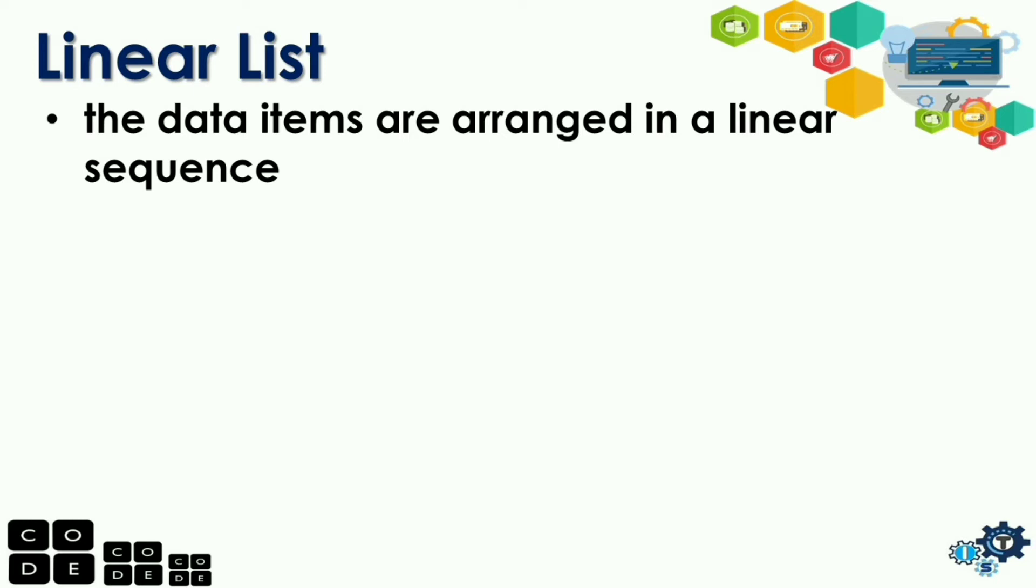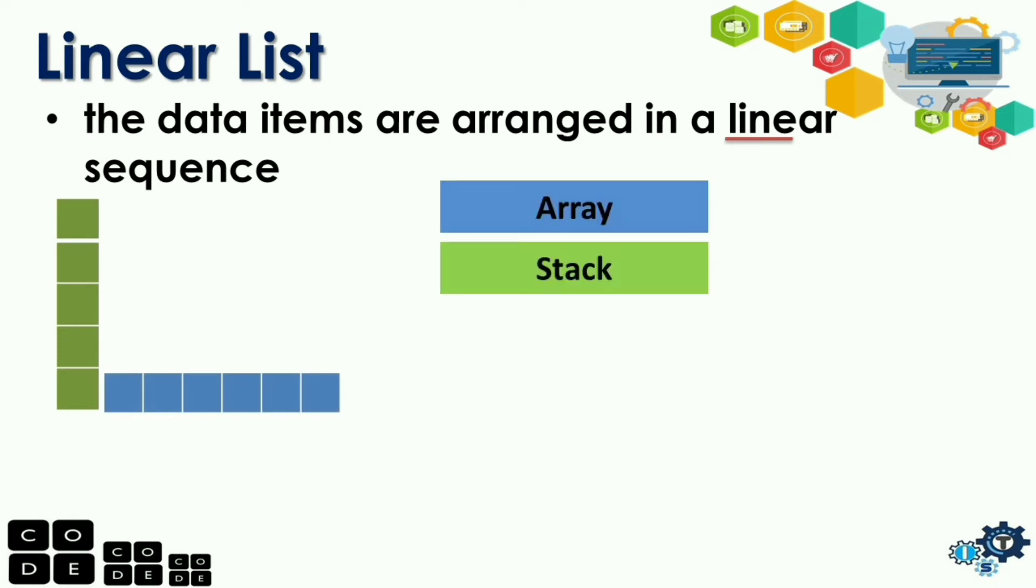So, from the word linear, makikita nyo dyan yung word na line. So, these are data structures na arranged vertically or pwede ding horizontal. So, example of linear lists are arrays, stacks, queue, at saka link lists.